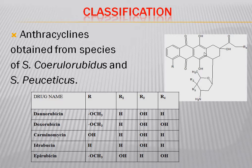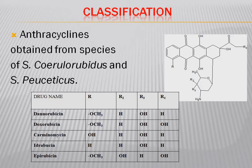This is the structure of anthracycline antibiotics, which consists of a tetracycline ring structure with a sugar known as daunosamine, attached by a glycosidic linkage. If we consider ring A, ring B, ring C, and ring D, then rings A, B, and C are known as the anthraquinone ring. Ring D is a hexane ring, making this a tetracyclic ring system.